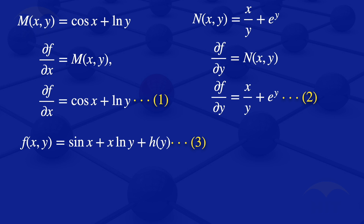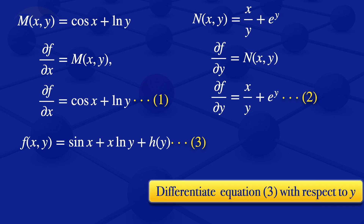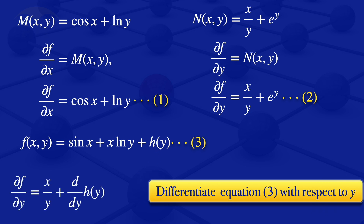We now differentiate equation 3 with respect to y to get the partial derivative of f with respect to y. Differentiating sine of x with respect to y — treating x as a constant — gives zero. Differentiating x ln y with respect to y gives x divided by y. Differentiating h(y) gives the ordinary derivative of h(y) with respect to y. So the partial derivative of f with respect to y equals x divided by y plus dh/dy. I'll call this equation number 4.